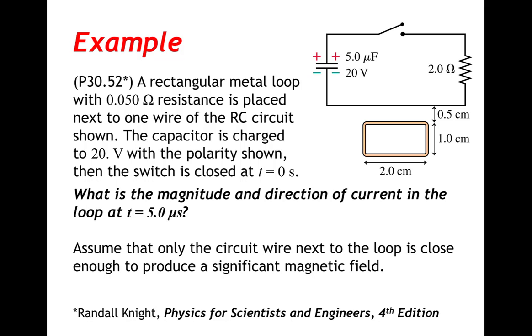What is the magnitude and direction of current in the loop at 5.0 microseconds? Assume that only the circuit wire next to the loop is close enough to produce a significant magnetic field.